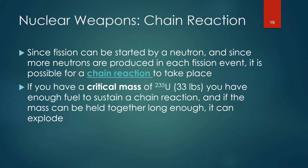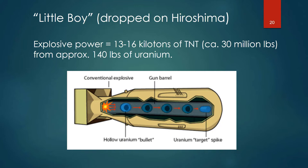That's the basis of nuclear weapons created in the forties. Here's a schematic of Little Boy, the bomb dropped on Hiroshima. Its explosive power was equal to 13 to 16 kilotons of TNT — the unit they use to measure explosive power. That was due to there being 140 pounds of uranium in this bomb. It requires a much smaller mass of uranium to get the same explosive power as TNT.